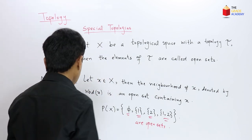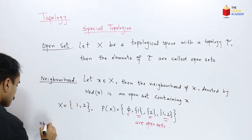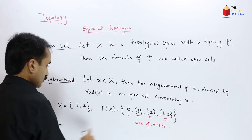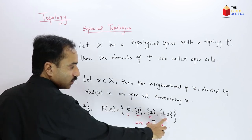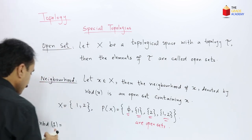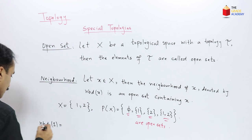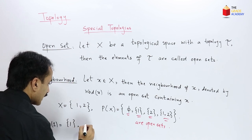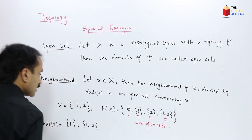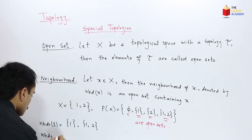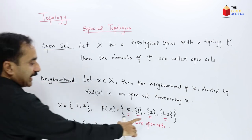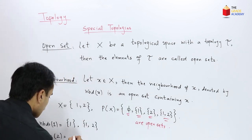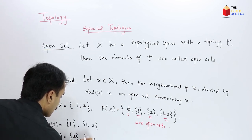Now, the neighborhood of 1 is any open set containing 1. There are 2 open sets which contain 1, so there are 2 neighborhoods of 1: the set {1} and the set {1, 2}. Similarly, the neighborhood of 2 — since 2 is contained in {2} and {1, 2} — the neighborhoods of 2 are the set {2} and the set {1, 2}.